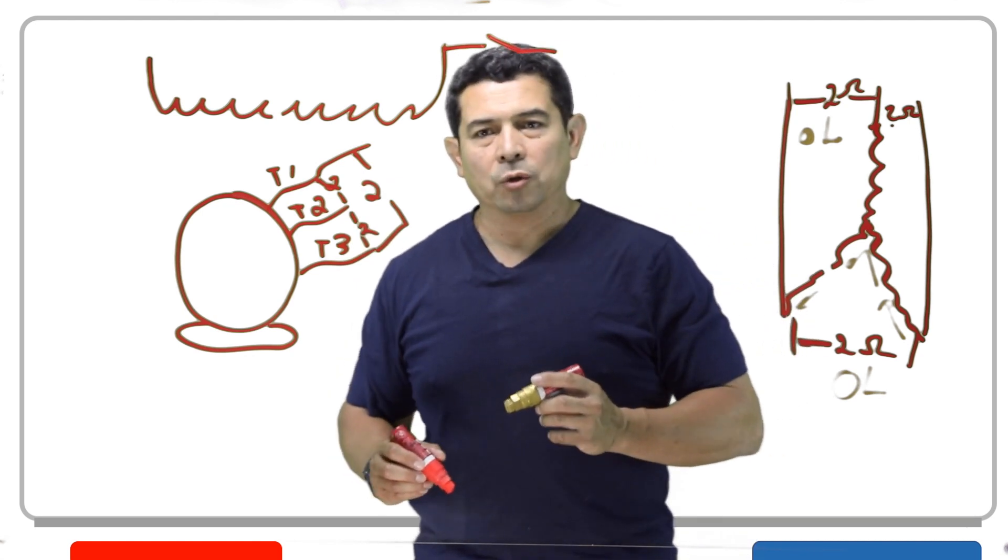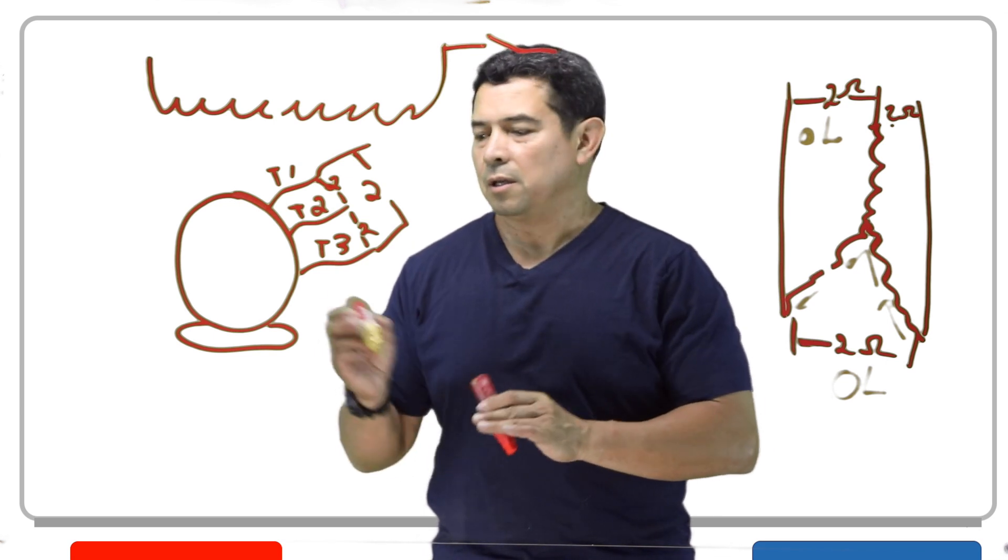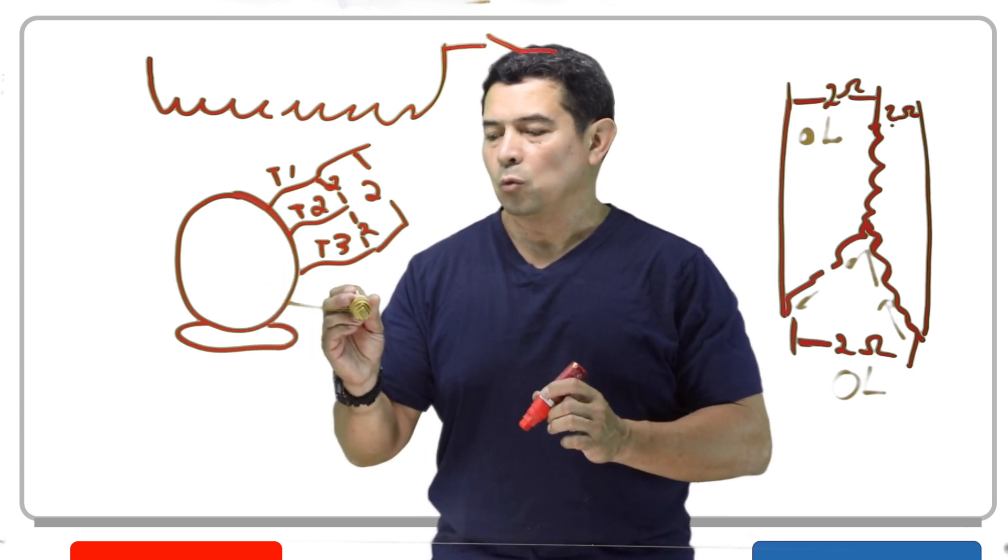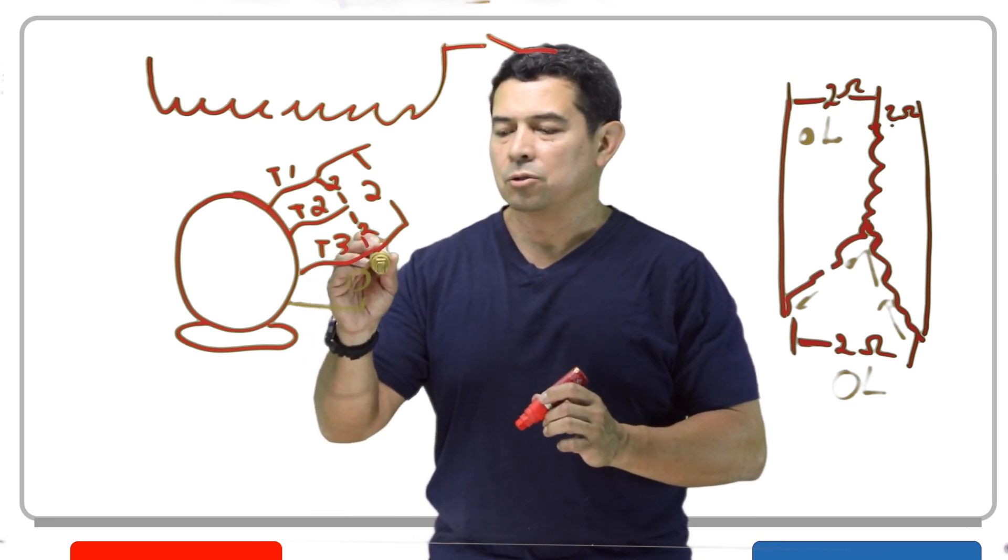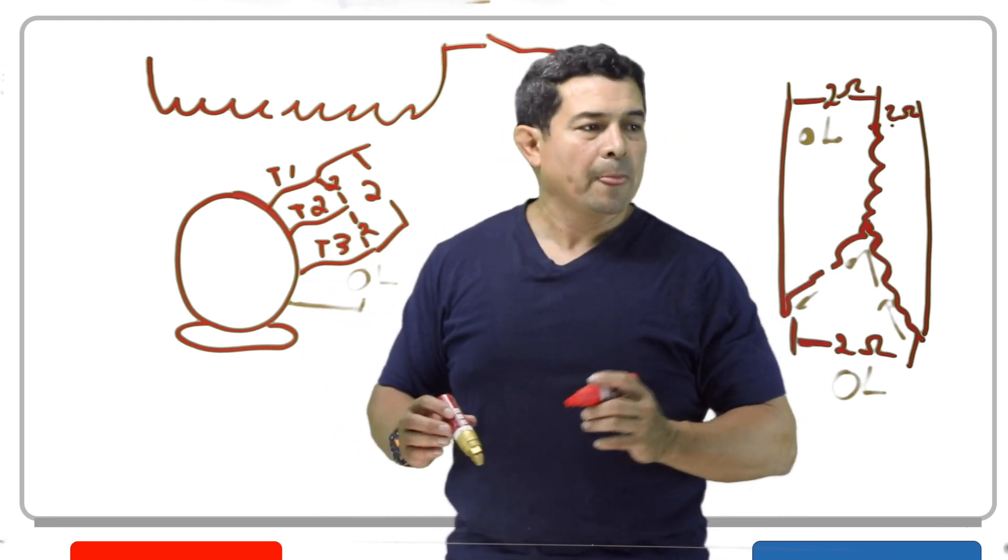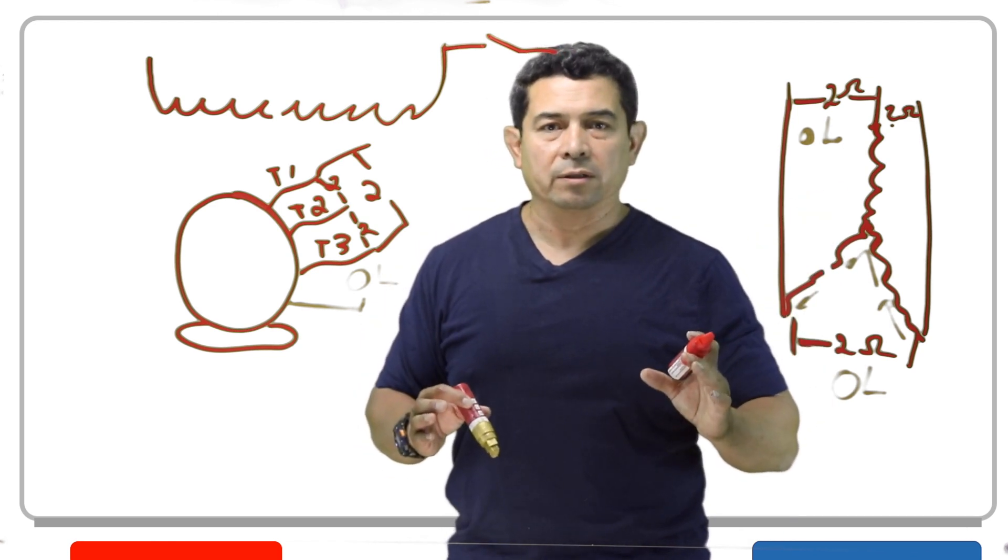Then one thing I wanted to make sure I explained was that between any of these lines and the casing, what should you get? Between any of these lines and the casing you should get OL. You should always get OL. But this is an example of what an open is.